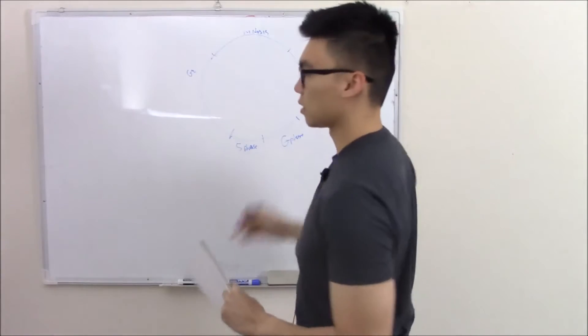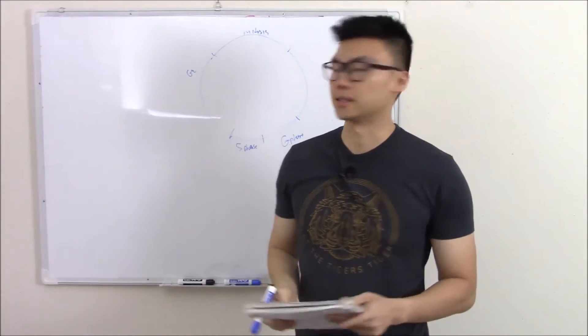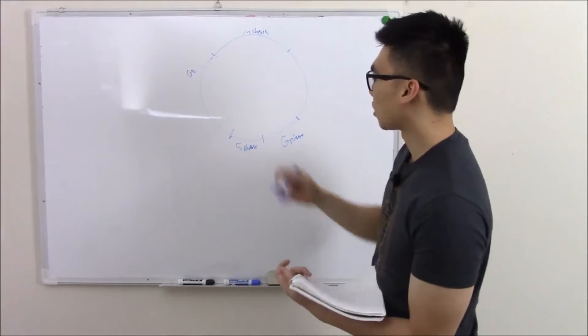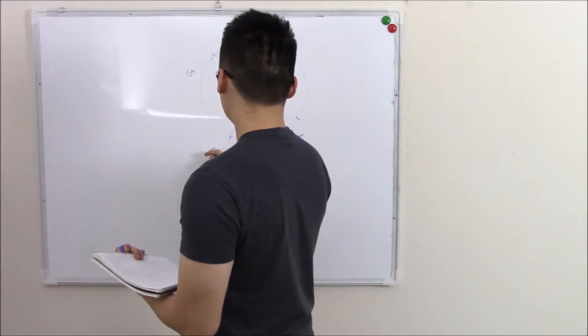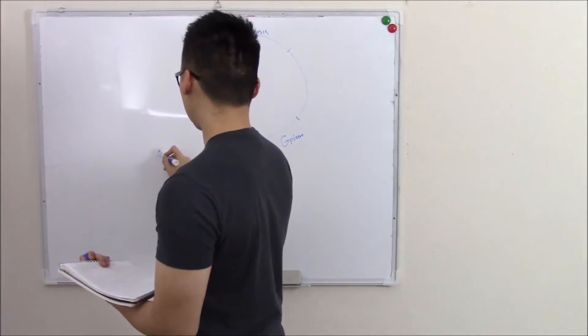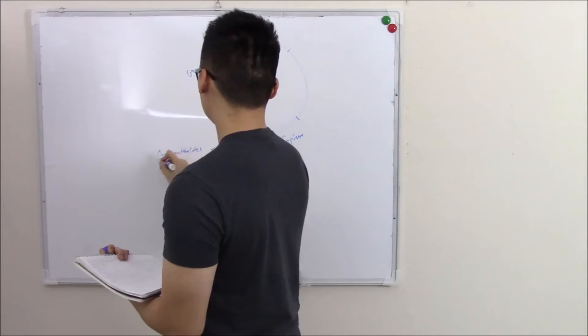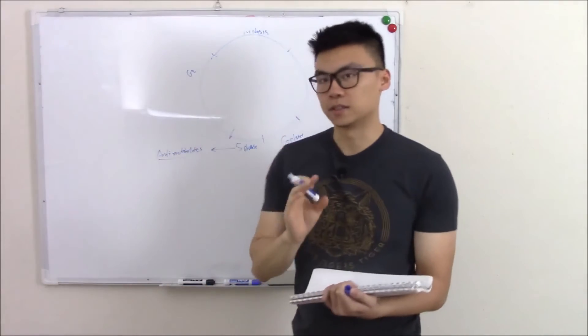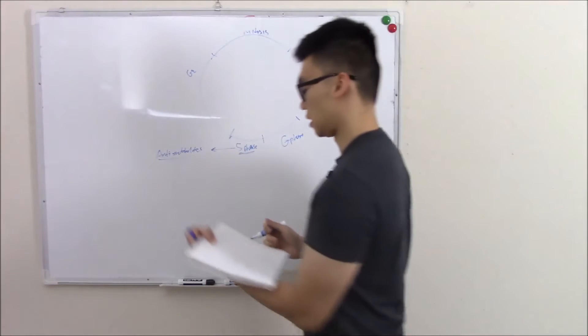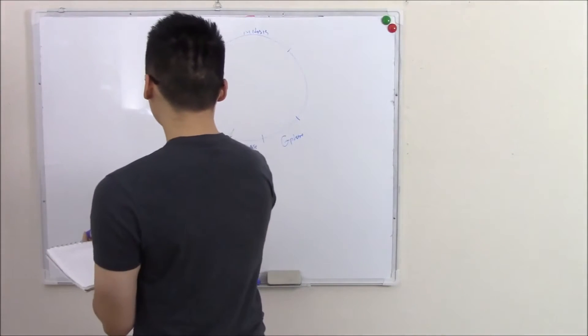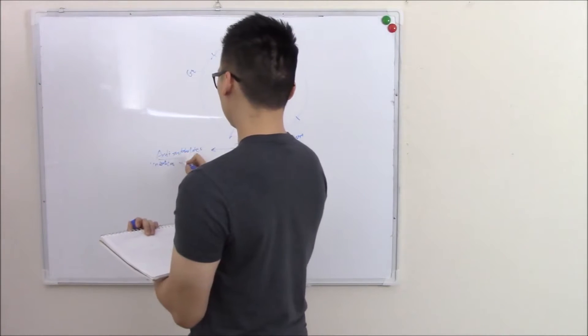We're going to go through each part of the cell cycle and talk about what drugs work on each particular phase, because that's how they like to test it. So we'll start with the S phase. S phase drugs are going to be your anti-metabolites. These are drugs that stop the synthesis of DNA. That's what occurs during the S phase. So anti-metabolites interfere with DNA synthesis.